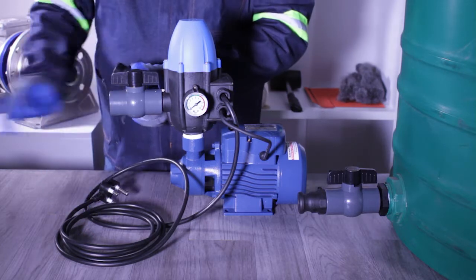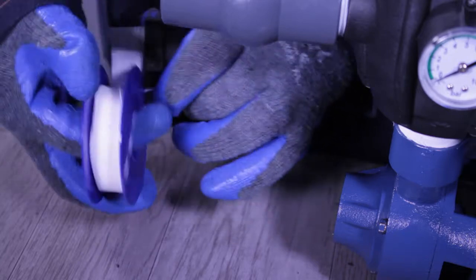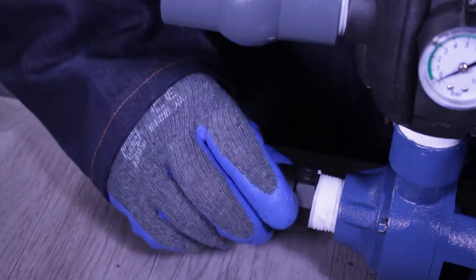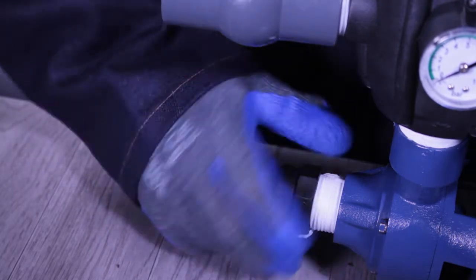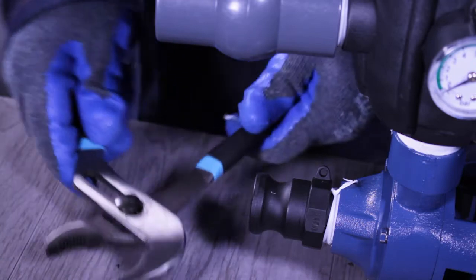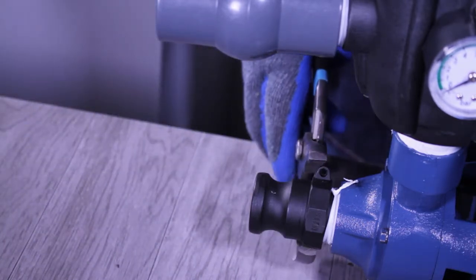Apply thread tape to the male camlock fitting and connect the fitting to the inlet of the pump. Using the water pump pliers, tighten the male camlock fitting.